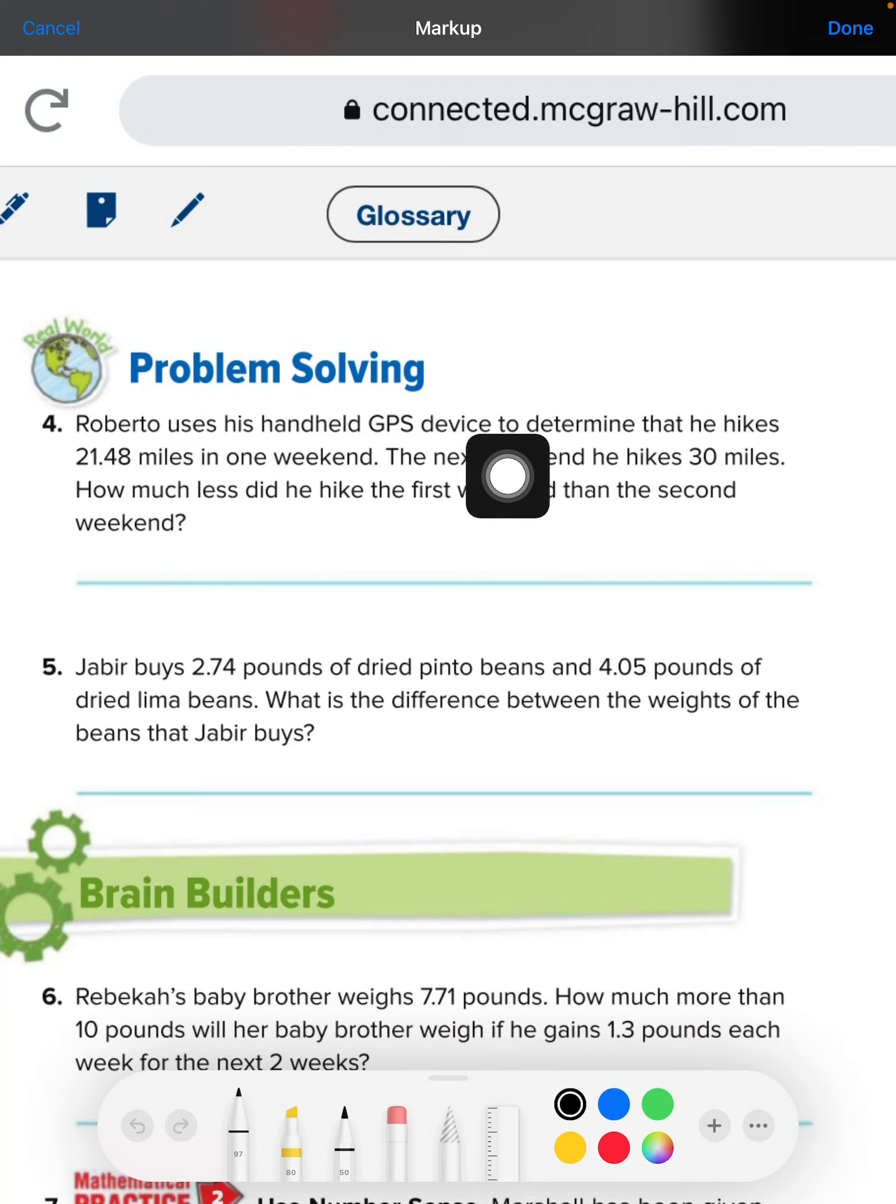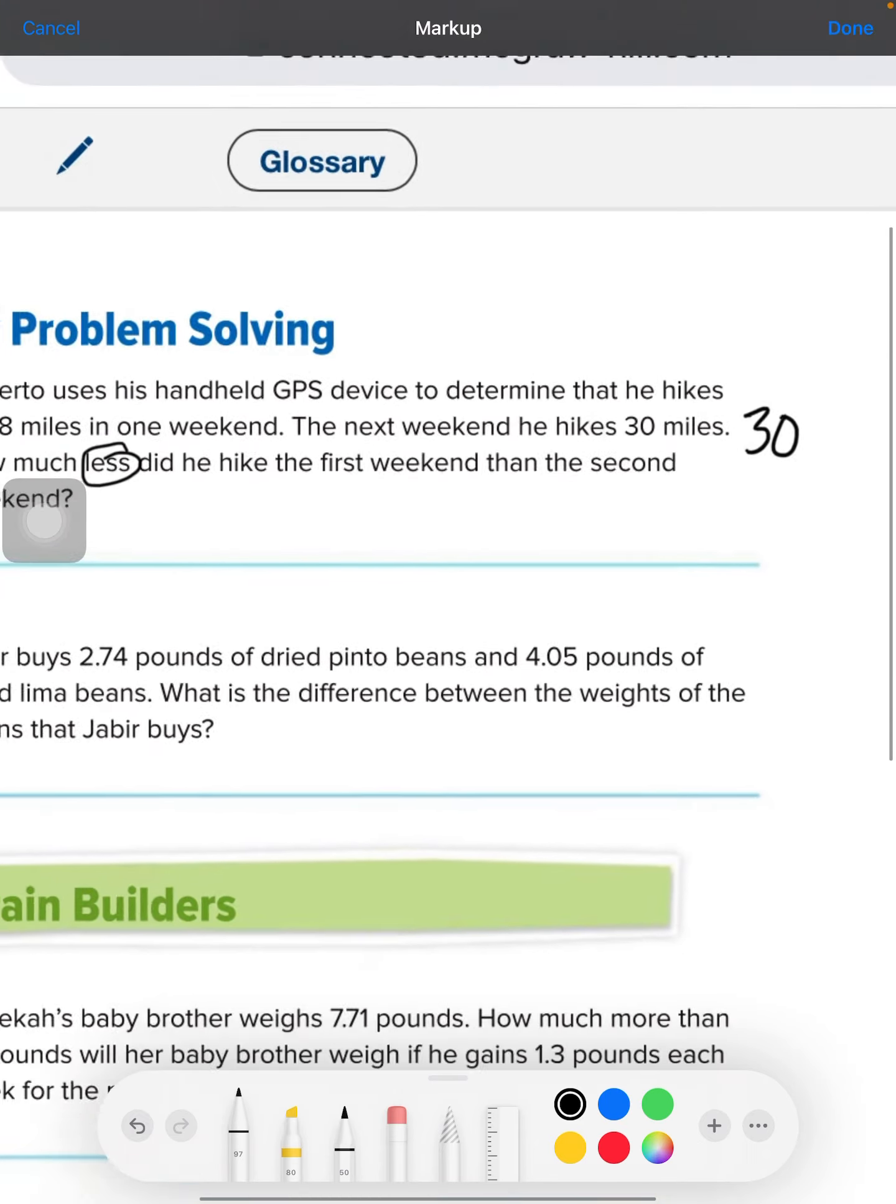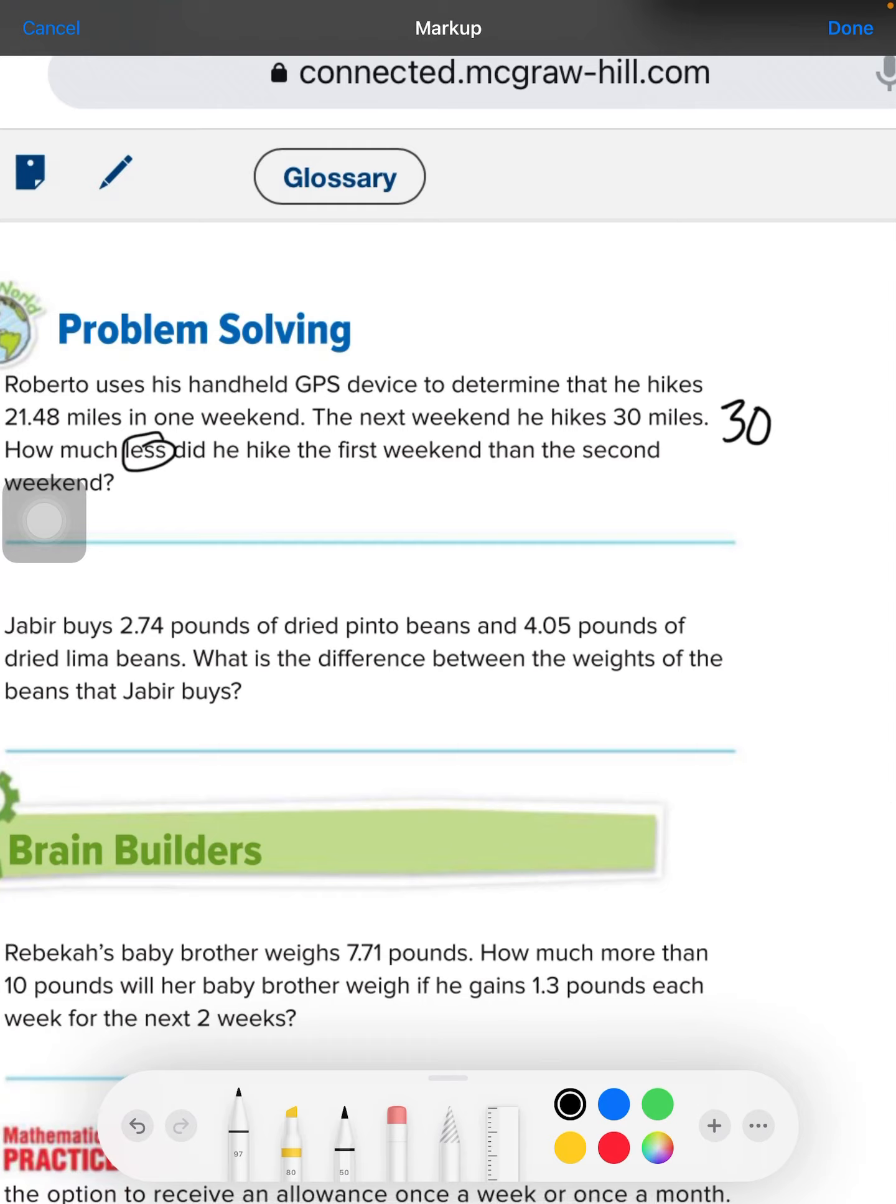Roberto uses his handheld GPS device to determine that he hikes 21.48 miles in one weekend. The next weekend, he hikes 30 miles. How much less did he hike the first weekend than the second weekend? So, less. So, 30 is how much he hiked the second weekend. Now, the first weekend, he hiked 21. Then we have a decimal point. They want to see if you can line this up.